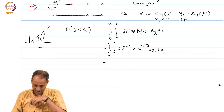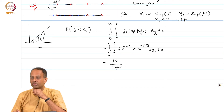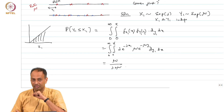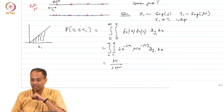You should get mu over lambda plus mu. Just check if this is coming out to be correct.